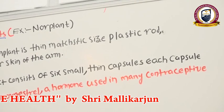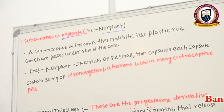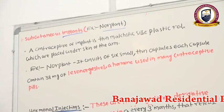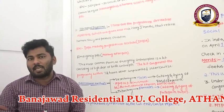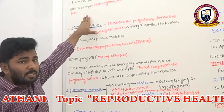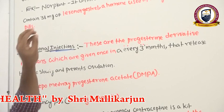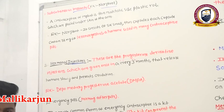An example of subcutaneous implants is Norplant. What are implants? An implant is a device containing hormones that we place under the skin to slowly release medicine to prevent pregnancy. While placing these implants, we make a minor cut on the arm, insert the device, and later remove the implant through another minor cut.